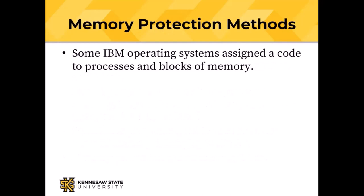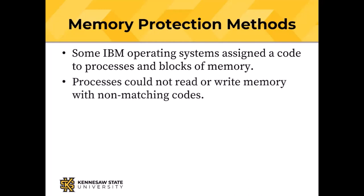Some IBM operating systems assigned a code to processes and the same code to blocks of memory. A process could only read or write memory that had a code matching that code of the process. Back when I was working with IBM operating systems in the early days, that was a 4-bit code, which meant you could only have 16 processes. The operating system got code zero, so you could really only have 15 applications.